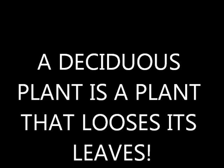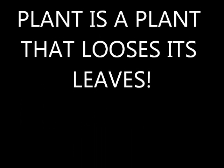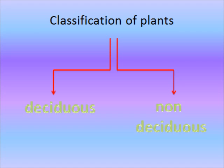I bet this is a new word for most of you, but all a deciduous plant is, is a plant that loses its leaves. Just like animals, plants are living things and can also be categorised. There are two major types of plants, which include deciduous plants and non-deciduous plants.